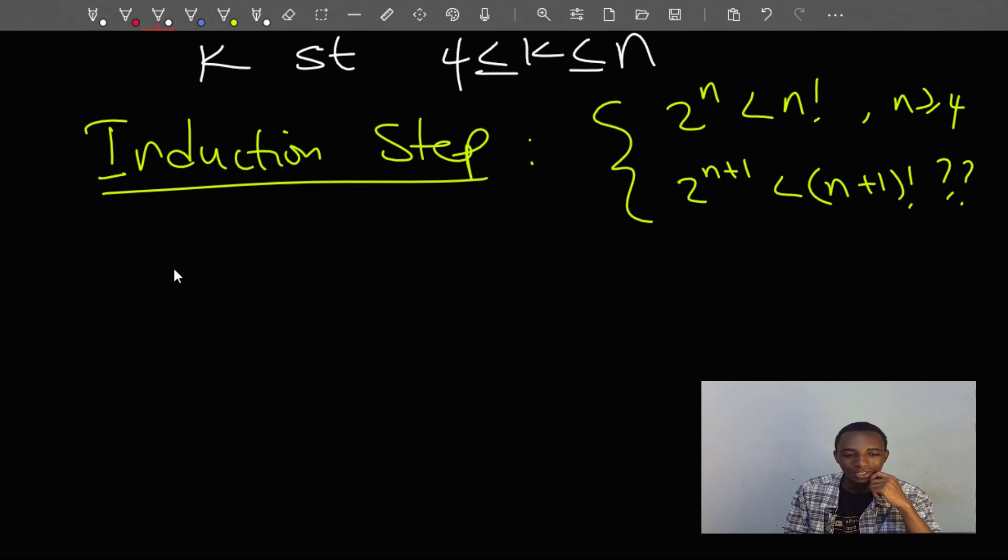So 2 to the power n plus 1, this is the same as 2 times 2 to the power n. I'm just using the laws of indices to expand this. The reason I'm doing this is because I actually have 2 to the power n here from the hypothesis. So this should be less than 2 times n factorial, because we know that 2 to the power n is less than n factorial.